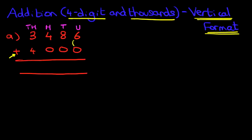The first three digits — the 486 on the top row — are being added to zero, so they're not going to change. Now we move on to the thousands: three plus four is seven. So our answer is 7,486.